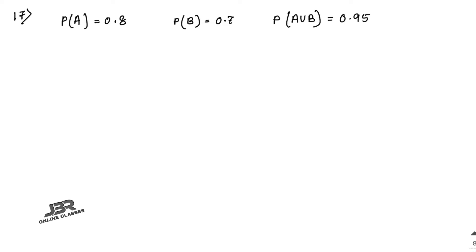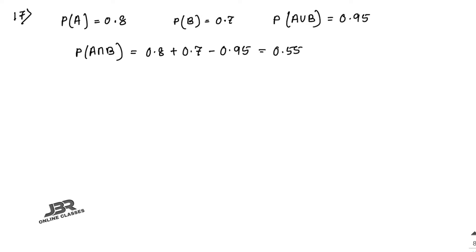Now find the probability of passing both — that means find P(A∩B). It's very easy: P(A) + P(B) − P(A∪B) = 0.8 + 0.7 − 0.95, and your answer is 0.55. It's very easy.